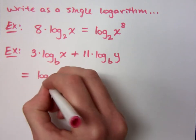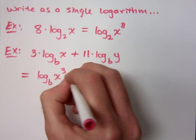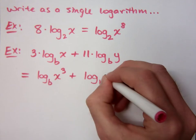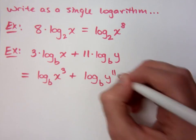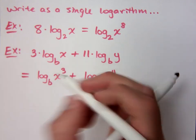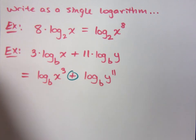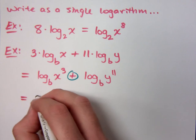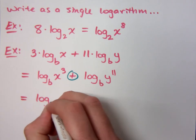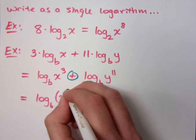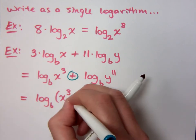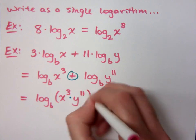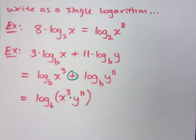Log with base b of x to the 3rd plus what? Log with base b, y to the 11th. But since I have addition of logs and they have the same base, how can I condense that? It's log b, x to the 3rd times y to the 11th. I don't need to write the times there, but I want to emphasize that for you.